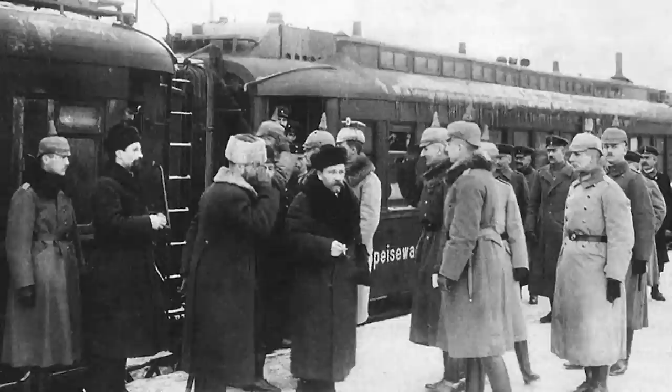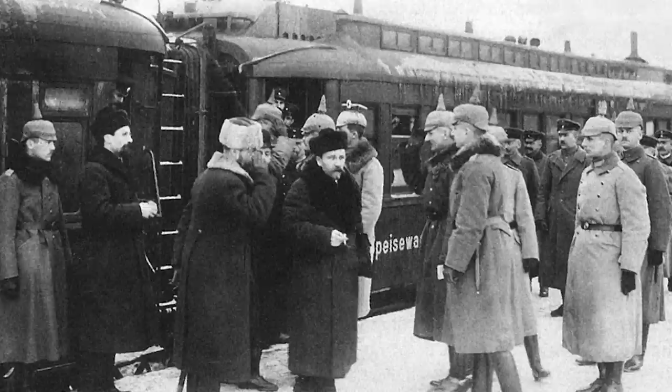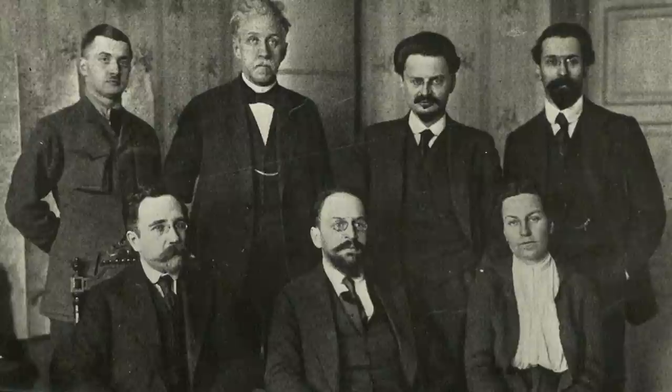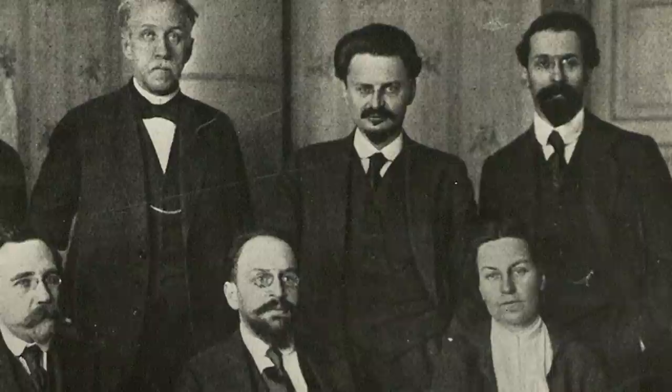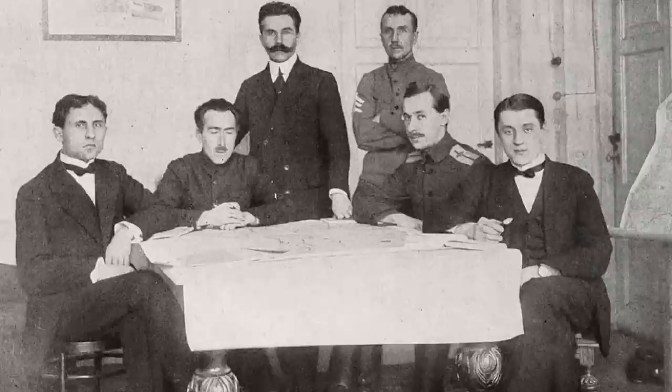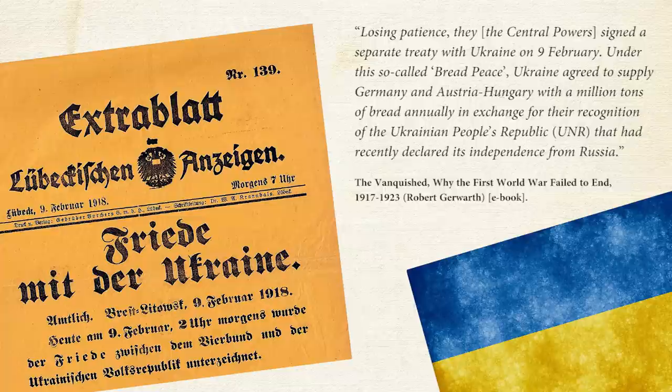Soon, peace talks between the Bolsheviks and the Central Powers started at Brest-Litovsk, and this became a struggle. On January 30th, Leon Trotsky, Bolshevik leader, came to Brest-Litovsk and stated: no war, no peace — in other words, Trotsky refused to sign anything. Who did sign something was the Ukrainian Rada, because they sent their own delegation to Brest-Litovsk to sign a separate peace treaty with the Central Powers, and their government was recognized by them. Losing patience, the Central Powers signed a separate treaty with Ukraine on the 9th of February. Under this so-called bread peace, Ukraine agreed to supply Germany and Austria-Hungary with a million tons of bread annually in exchange for recognition of the Ukrainian People's Republic, which had recently declared its independence from Russia.